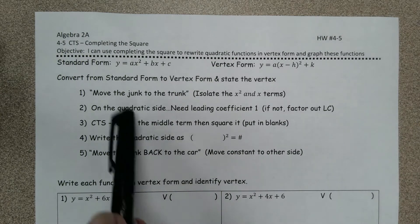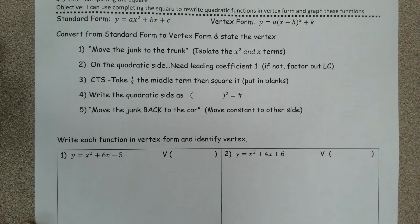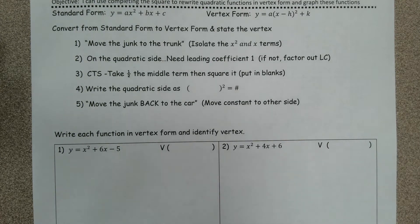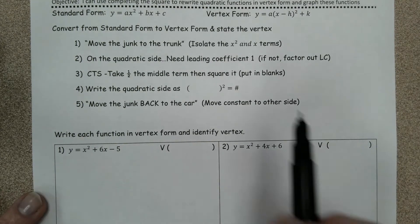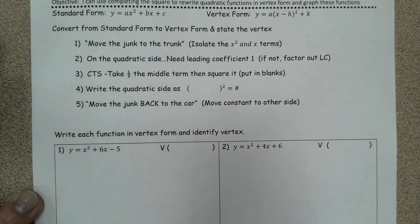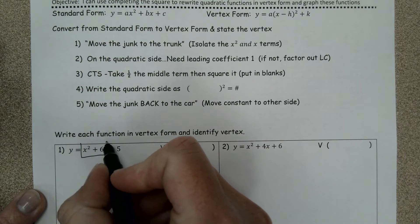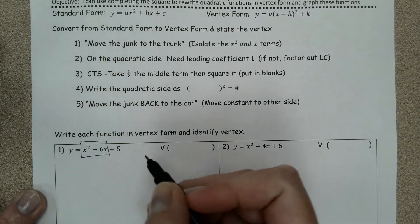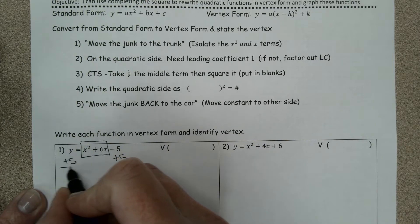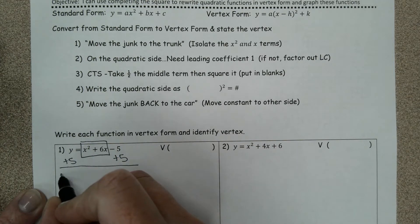There's a couple of steps that we have to do. The first one we titled move the junk to the trunk, that's basically isolate the x² and x terms. So we want to isolate those two terms on one side of the equal sign. That means I'm going to have to add the 5 over to the other side.